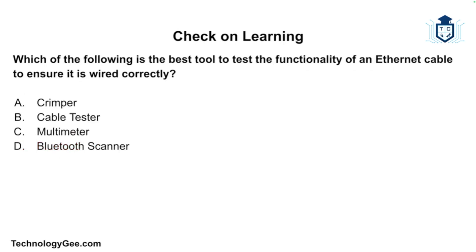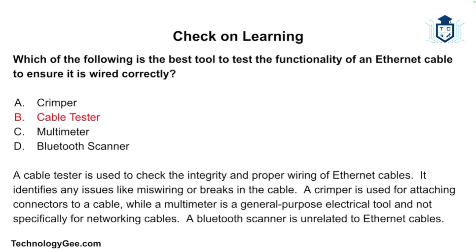Finally: Which of the following is the best tool to test the functionality of an ethernet cable to ensure it is wired correctly — a crimper, a cable tester, a multimeter, or a Bluetooth scanner? The correct answer is a cable tester. A cable tester checks the integrity and proper wiring of ethernet cables and identifies issues like miswirings or breaks. A crimper is used for attaching connectors, a multimeter is a general-purpose electrical tool not specific to networking cables, and a Bluetooth scanner is unrelated to ethernet cables.